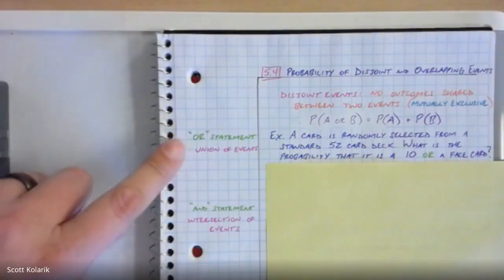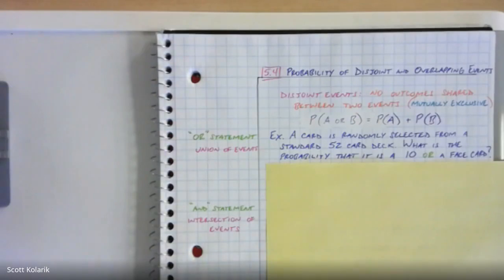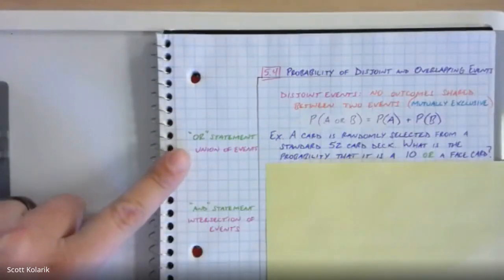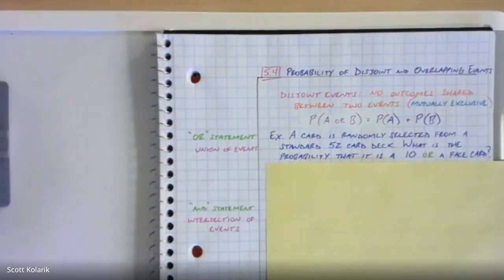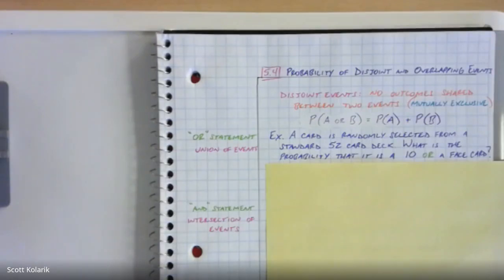For an 'or' statement, let me use a football analogy for betting — that tends to be the category many of us associate with probability. What 'or' fundamentally does — and you can put this in your own words in the margins — is it expands the realm of possibility. For tonight's Monday Night Football game, finding the probability that Russell Wilson throws a touchdown pass would be a single event.